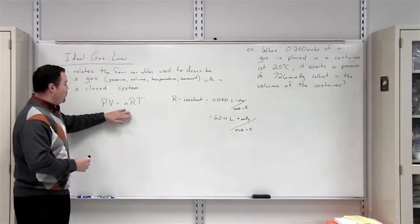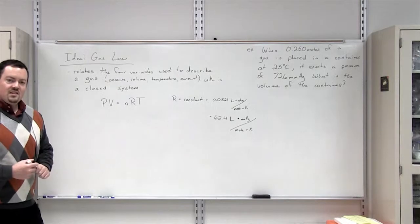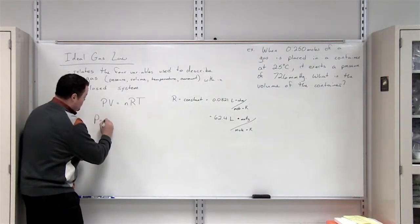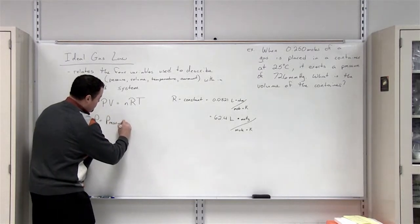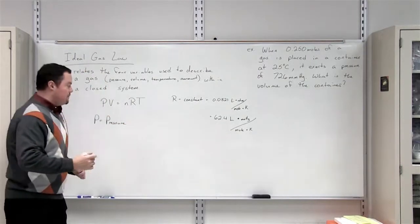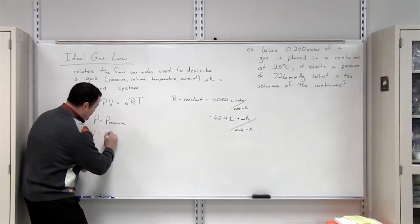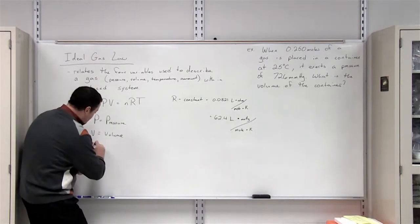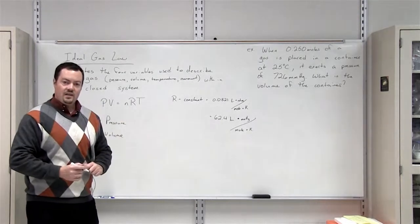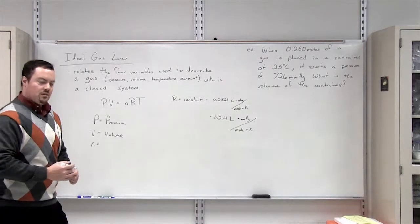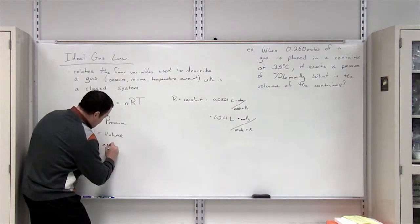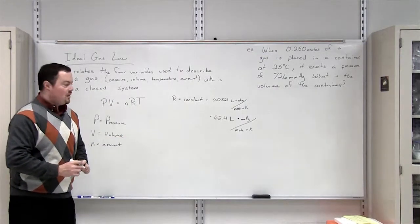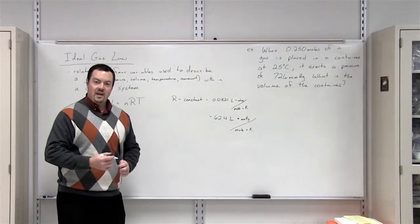So the ideal gas law formula is PV is equal to NRT. So the P is the pressure of the gas. V is equal to the volume. N, or the lowercase n, refers to the amount of gas present. R is a constant value. This is known as our ideal gas constant.